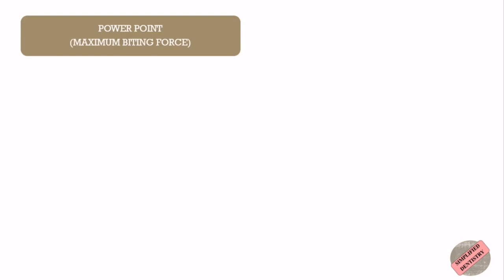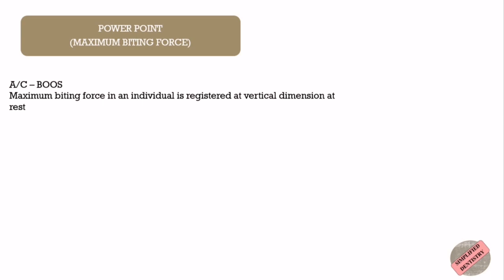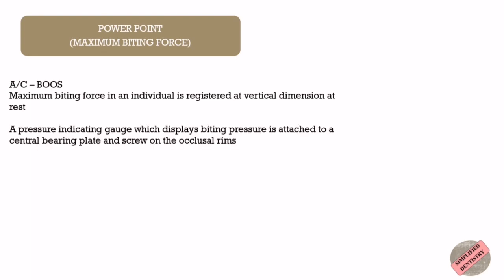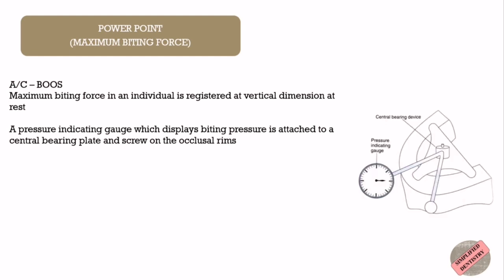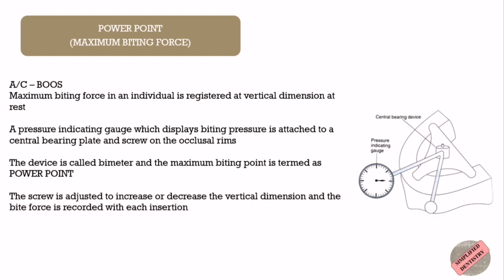The second approach under neuromuscular perception is calculating the maximum biting force. Boos demonstrated that the maximum biting force in an individual is registered at vertical dimension at rest. This method involves attaching a pressure-indicating gauge displaying biting pressure to a central bearing plate and screw on the occlusal rim. The device used is called a bimeter, and the maximum biting force is termed the power point. The screw is adjusted to increase or decrease the vertical dimension, and the bite force is recorded with each insertion. Boos stated that the vertical dimension of occlusion is the rest position or maximum force minus 2 mm.